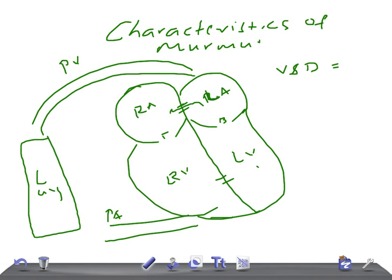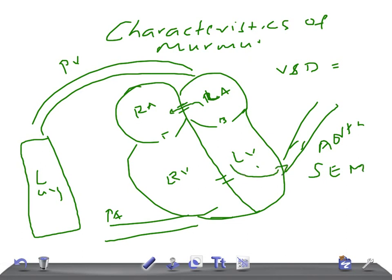Aortic stenosis: the aorta arises from the left ventricle. The characteristic murmur is a systolic ejection murmur at the right upper sternal border, radiating to the neck and down the left sternal border. It is systolic ejection because during systole, blood is ejected through the narrowed aortic valve. Aortic regurgitation, in contrast, causes a diastolic murmur as blood flows back into the left ventricle during diastole.